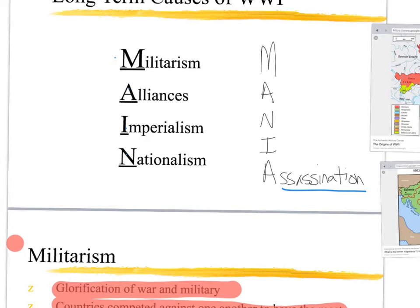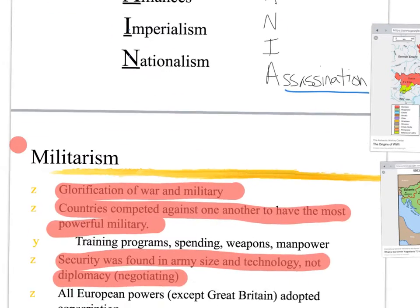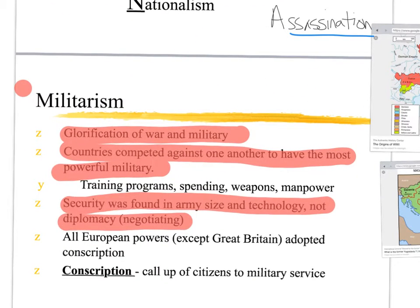So we're going to break down each of these as we go through this PowerPoint: militarism, alliance, imperialism, nationalism. Militarism is the glorification of war — it's the glorification of the military. Countries competed against one another to see who had the most powerful military.